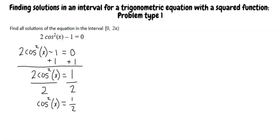We square root both sides of the equation, and write cosine of x equals plus or minus square root of 1 half. Now, let's simplify the fraction on the right-hand side of the equation.